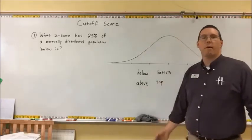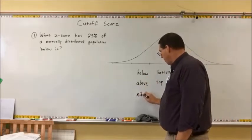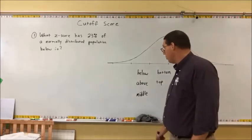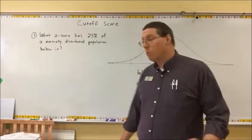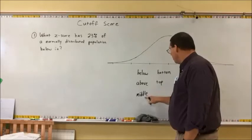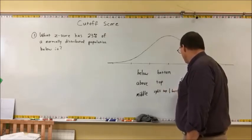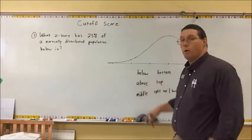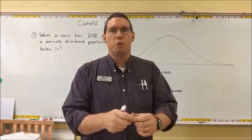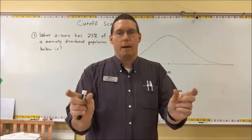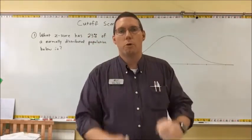Below questions involve things like the bottom 20%. Above questions involve things like the top 10% of a graduating class. Middle questions typically ask 'what are the middle numbers?' or 'between what two scores?' A middle question can also split the top and bottom — giving you a percentage and telling you to split it between the top and the bottom — which creates two cutoff scores defining a middle region.